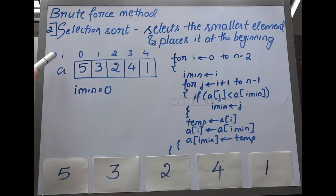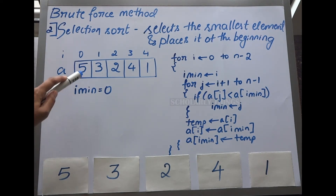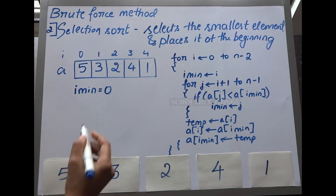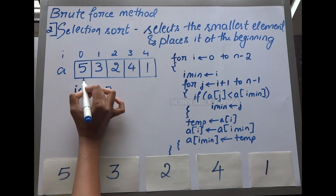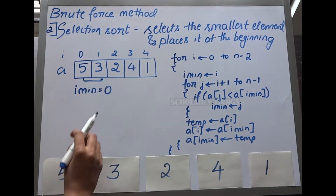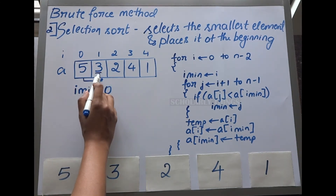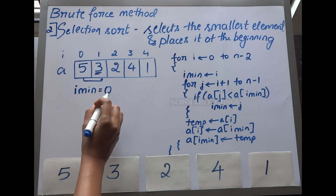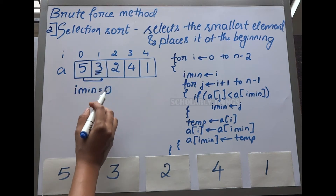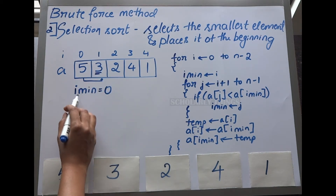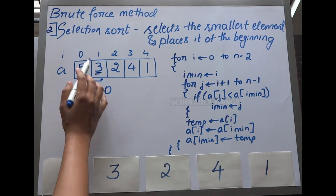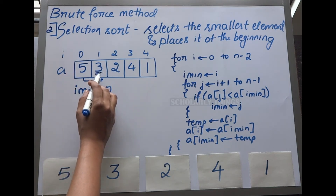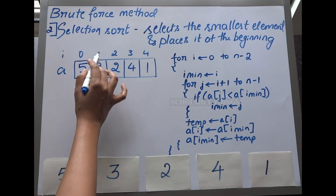Here is an array with values 5, 3, 2, 4, 1 at indices 0 through 4. At the beginning of the loop, i_min is 0, meaning the first element is 5. It compares 5 with the next element 3. Since 3 is less than 5, 3 becomes the minimum value and i_min becomes 1.